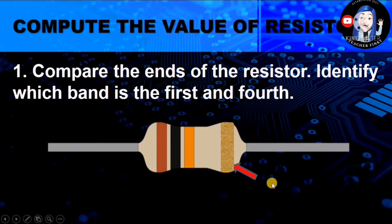The last and fourth band of a resistor has either a color of gold or silver as the tolerance. That will be the last band. From there, it will be easy to identify which is the first, second, and the multiplier band.